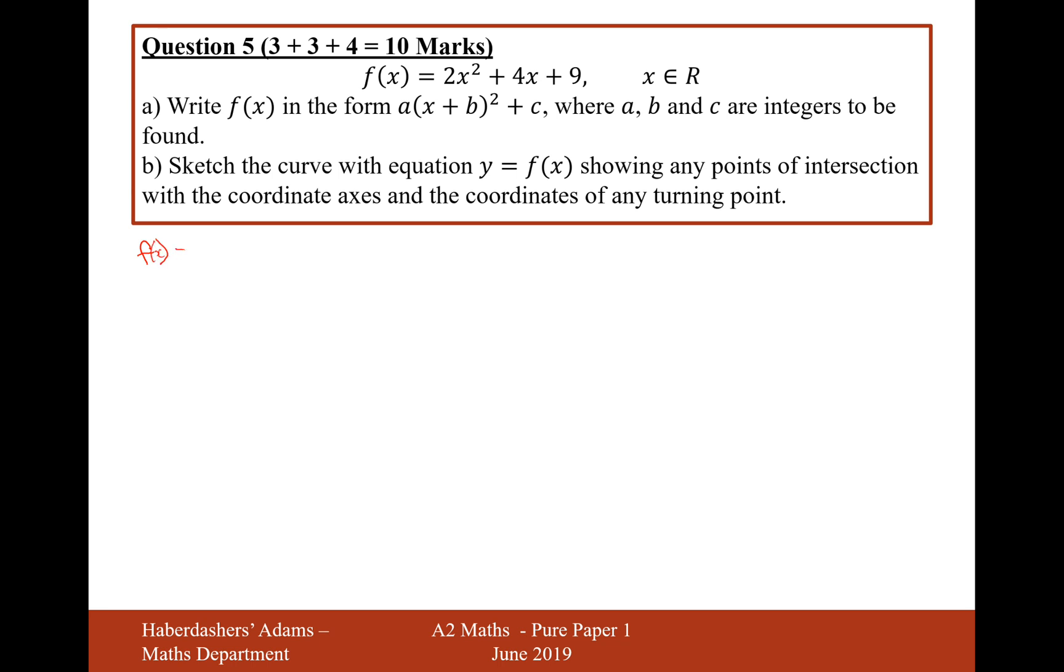The first part is part A, which is to write f of x in the completed square form. So let's get started on that one then. f of x equals 2x squared plus 4x plus 9. The first thing I'm going to do is factorise out that 2 from the first two terms, so x squared plus 2x, and I'll leave the plus 9 at the end.